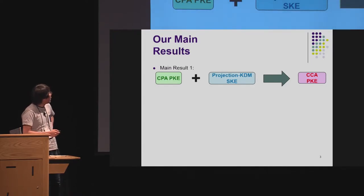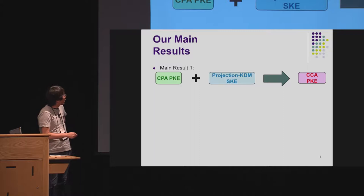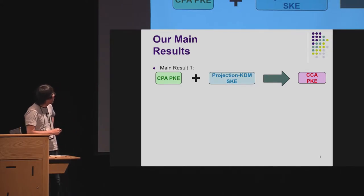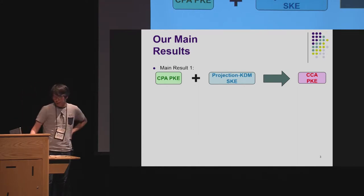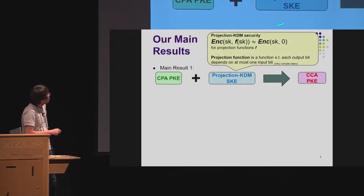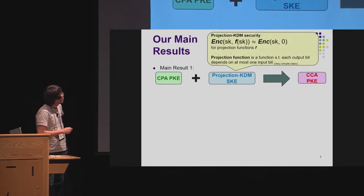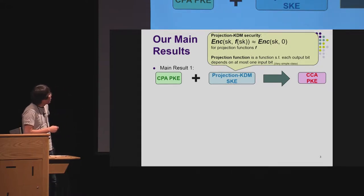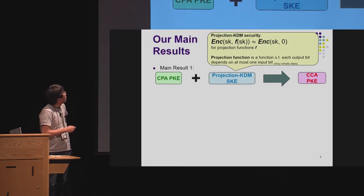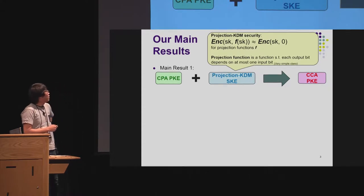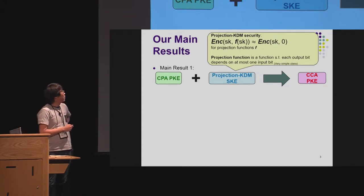We obtained two main results. In the first result, we obtained the construction of a CCA-secure PKE scheme from the combination of CPA-secure PKE and projection-KDM-secure SKE. For SKE, projection-KDM security means that the encryption of F of the secret key S is indistinguishable from the encryption of zero, where the function F must be a projection function. A projection function is a function such that each output bit depends on at most a single bit of the input.